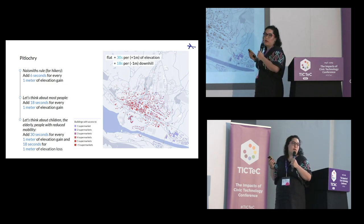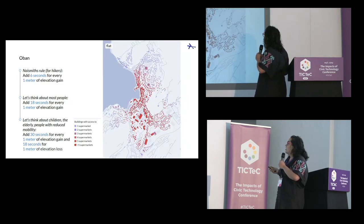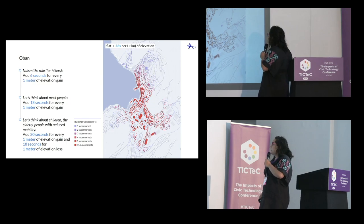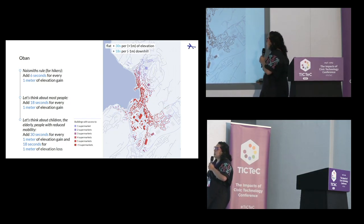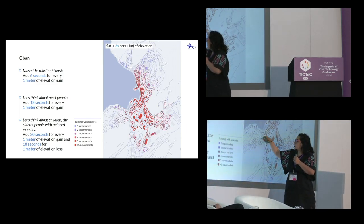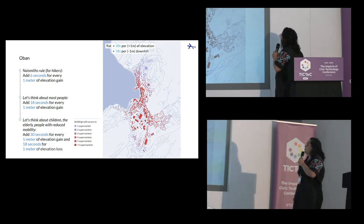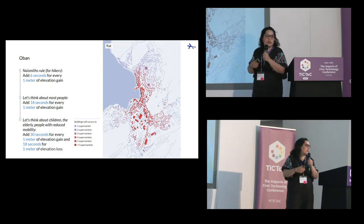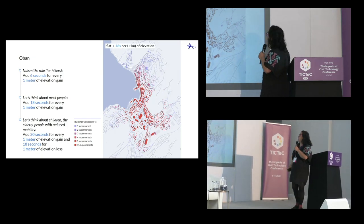We did this for lots of towns — I'm only showing you one because it was an easier story. Here's another town: Oban. In Oban, what I find very interesting is that as you progress, you have these close-knit communities that don't have a lot of roads between them — probably because of the hills — and they are really nice targets to have a shop there, because it can then be used by that whole sectioned area of the town.